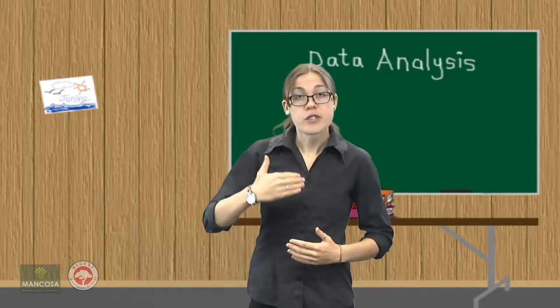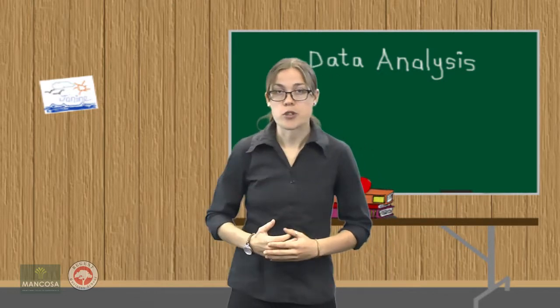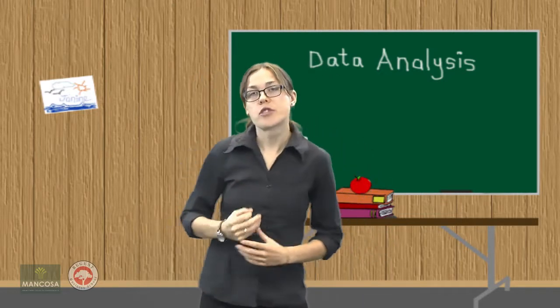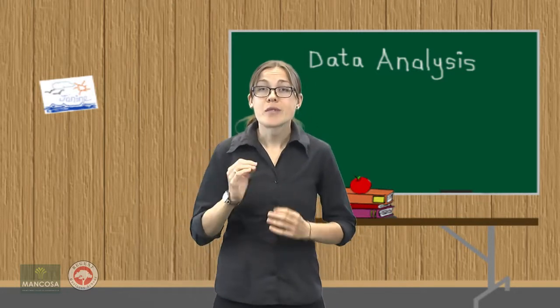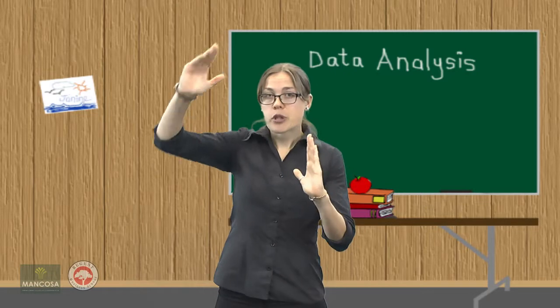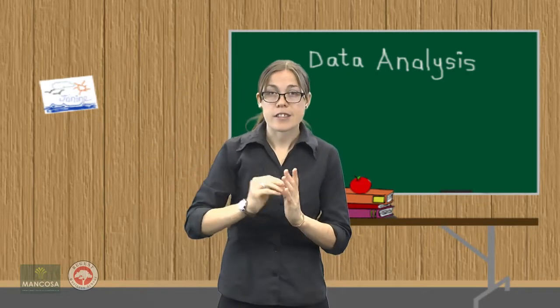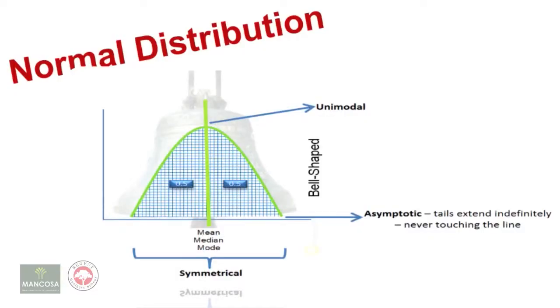The shape of distributions in statistics is very important. It is this very symmetrical bell-shaped curve that underlies a lot of our parametric tests. This distribution is known as the normal distribution, and it allows us to make inferences about the population based on our sample.